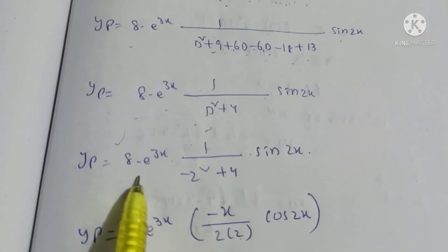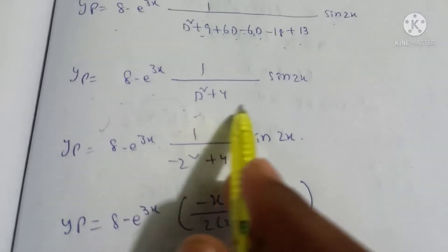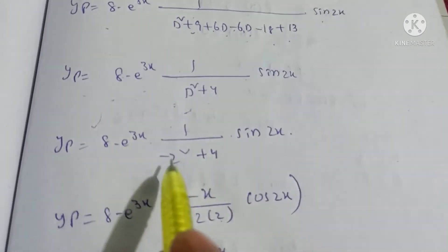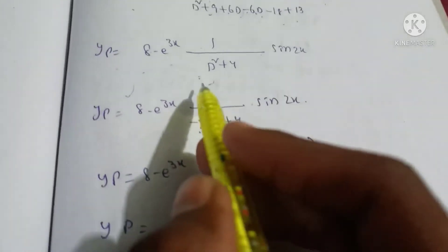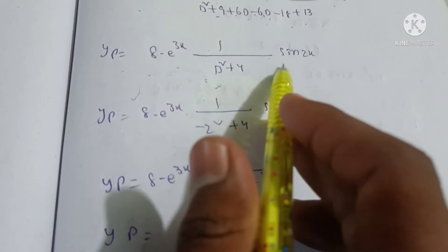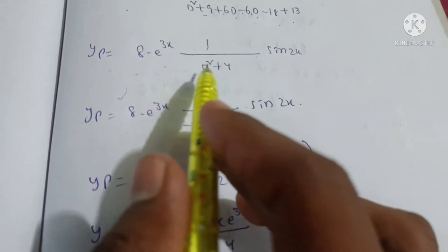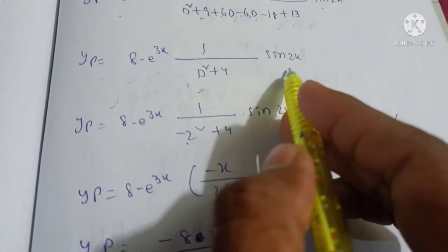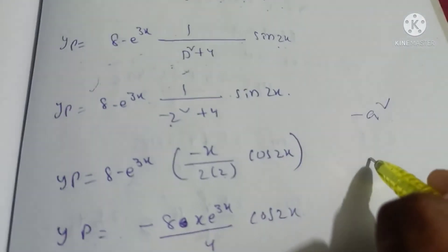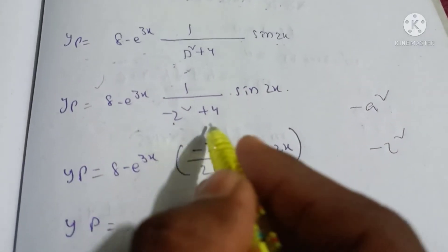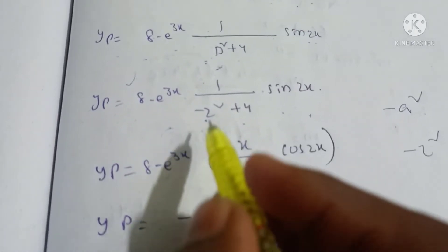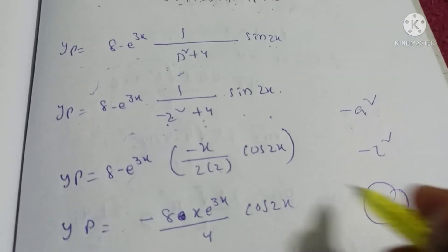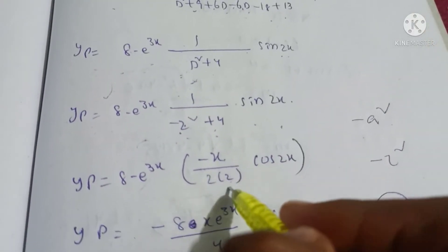Now applying the second method: in 1 divided by (D² plus 4) applied to sin(2x), we substitute D² equals minus a² where a equals 2, so D² becomes minus 4. This gives 1 divided by (minus 4 plus 4) equals 1 divided by 0, which is indeterminate. So we use the second method formula: x divided by 2a.